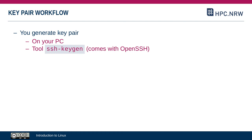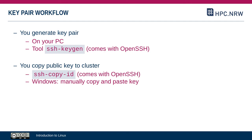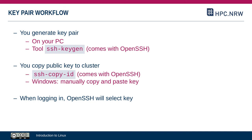To set up key-based authentication: first, generate a key pair on your PC, not on the cluster, using the ssh-keygen tool that comes with OpenSSH. Next, copy the public key to the cluster using ssh-copy-id, also included with OpenSSH. From that point on, whenever you log into a cluster where your public key is installed, OpenSSH will automatically log in using your key and will not ask you for a password.